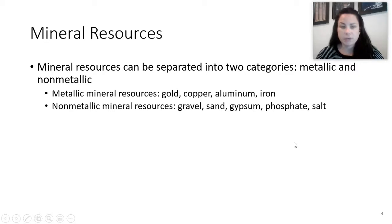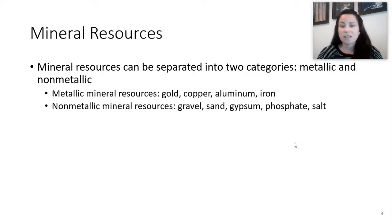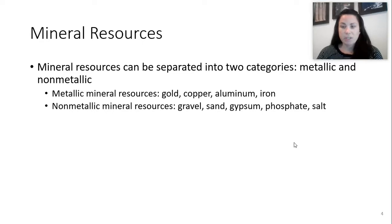So what's a mineral resource? Mineral resources can be separated into two categories: metallic and non-metallic. Metallic includes things like gold, copper, and aluminum. Non-metallic would be gravel, sand, gypsum, phosphate, and salt — all those things we use for construction. If you think about building concrete for our sidewalks, we have to get those materials somehow.